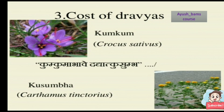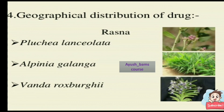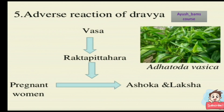Such as substituting Kumkuma with Kusumbha. Fourth is geographical distribution of the drug — in certain places only certain drugs will be available based on geographical extent, so in that case also we can use substitutes. Fifth is adverse reaction of dravyas — Vasa is a good Rakta-pittahara drug but has abortifacient activity.